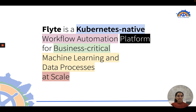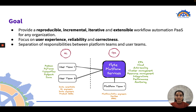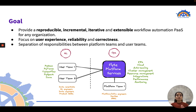Flight is a Kubernetes native workflow automation platform for business-critical machine learning and data processes at scale. The goal of Flight is to provide a reproducible, incremental, iterative, and extensible workflow automation platform as a service for any organization. Its focus is on user experience, reliability, and correctness.